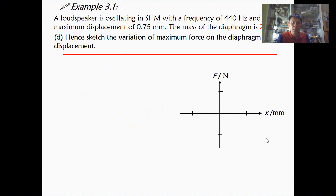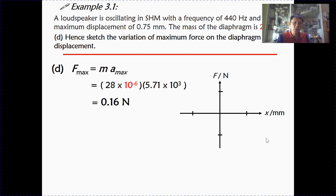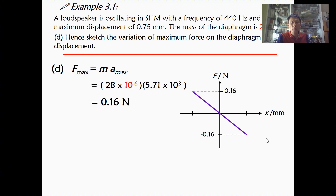This is where dynamics comes in. Force by Newton's second law is simply mass multiplied by acceleration. If we require maximum force, that corresponds to maximum acceleration. Using the previous answer from part c and multiplying by the mass — taking note that 28 mg is 28 × 10⁻⁶ kg — we get 0.16 newtons as the value for the maximum force.